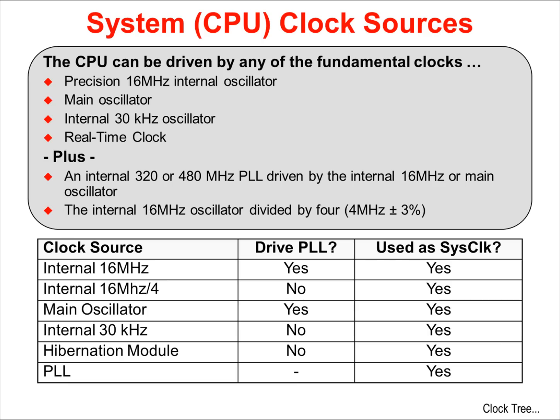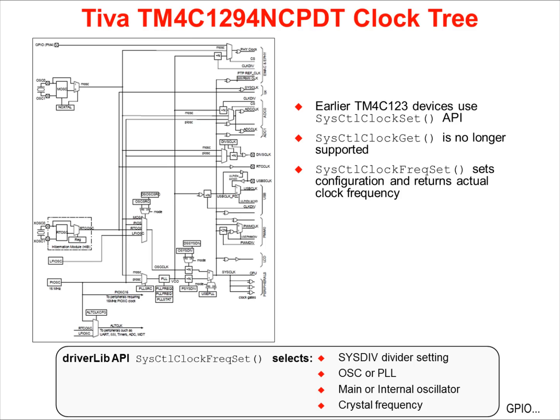Only the internal 16 MHz and main oscillators can drive the PLL. This is the Tiva C-Series clock tree. Its flexible implementation provides you with the different types of clocks you need for low-power operation, low-cost operation, and high-precision operation.